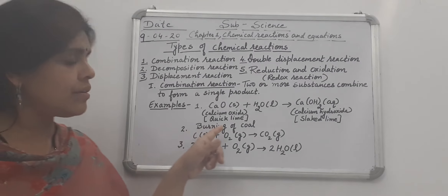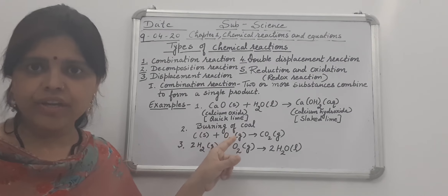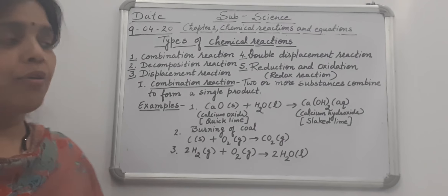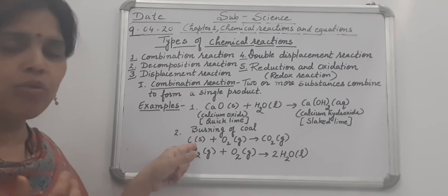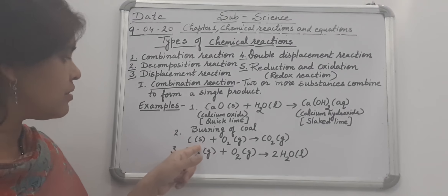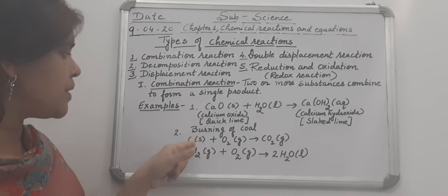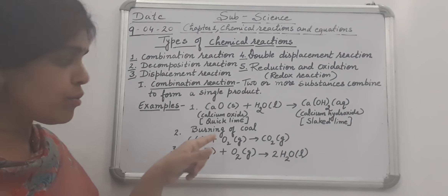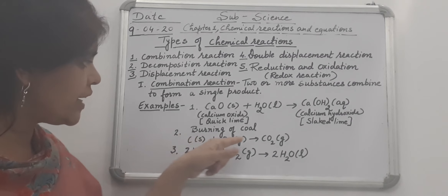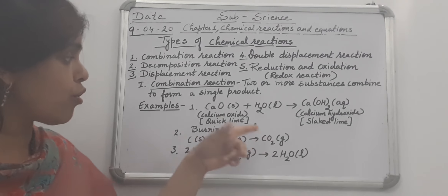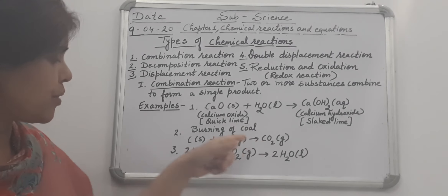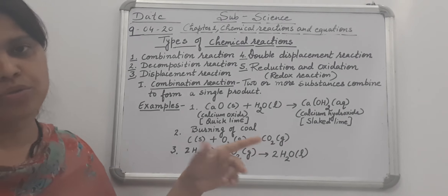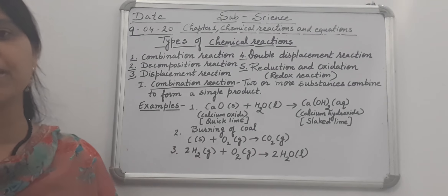The next example of a combination reaction is the burning of coal. Coal is a form of carbon. When we burn coal, oxygen is required in the burning process. It gives CO2 gas. This is also a combination reaction because two reactants combine together to form a single product.